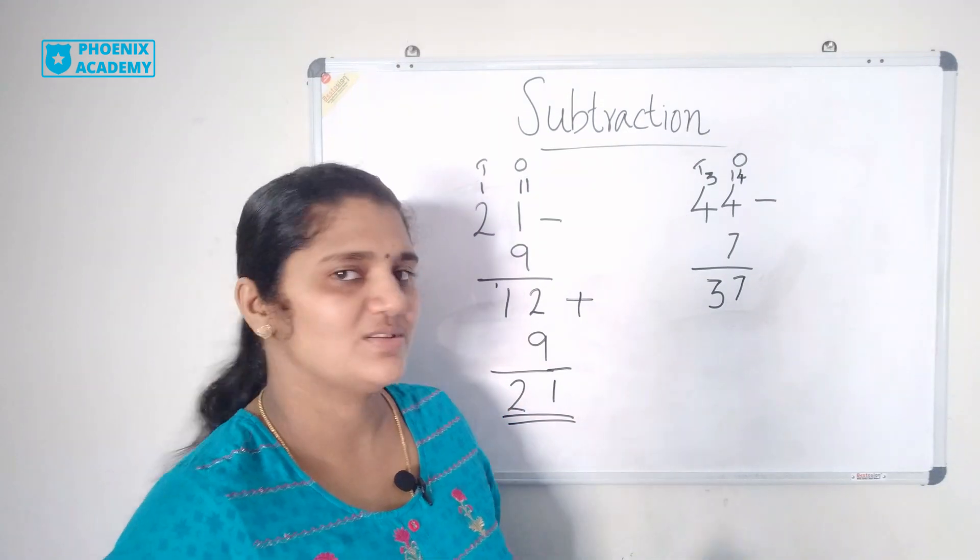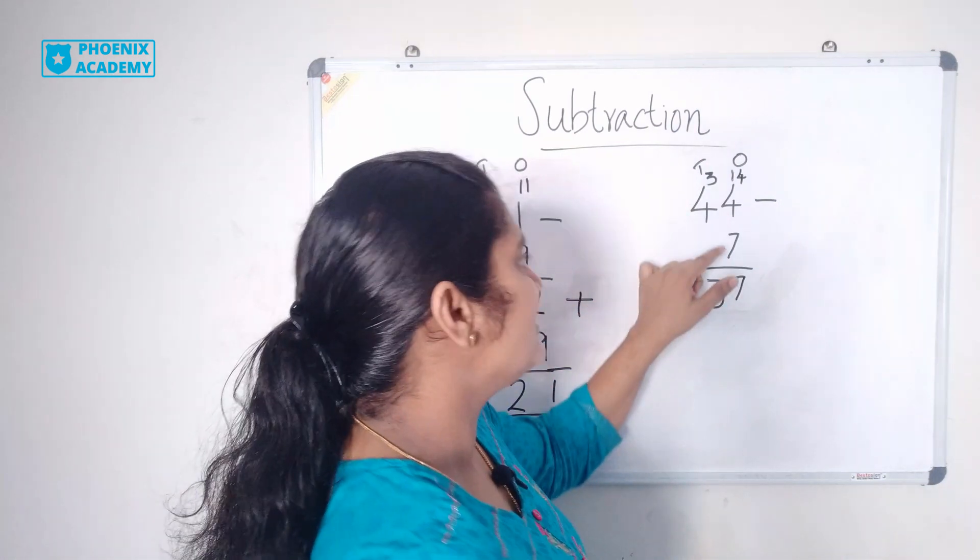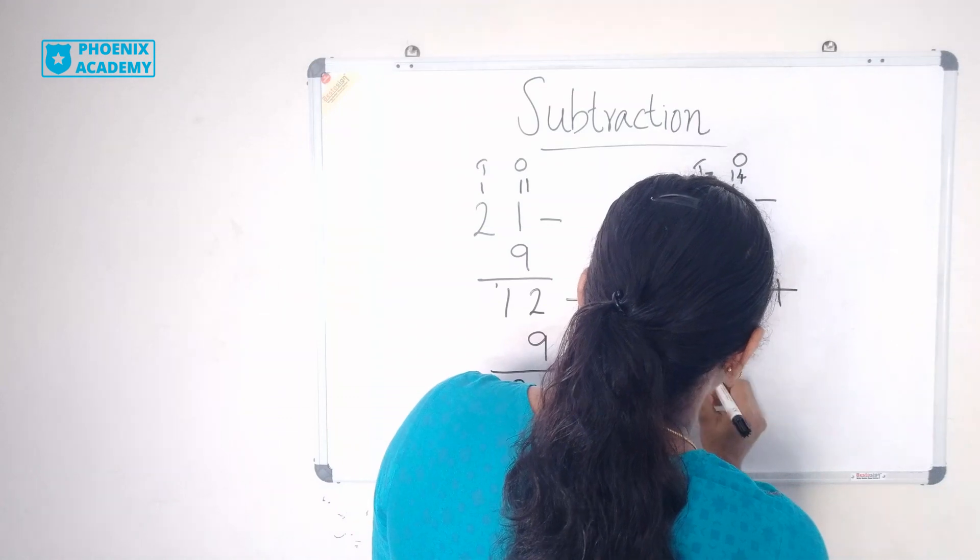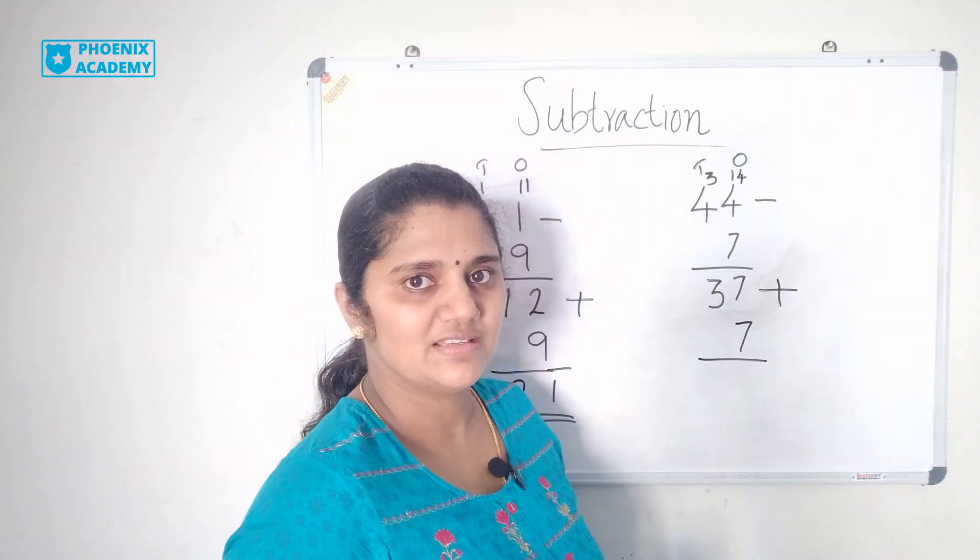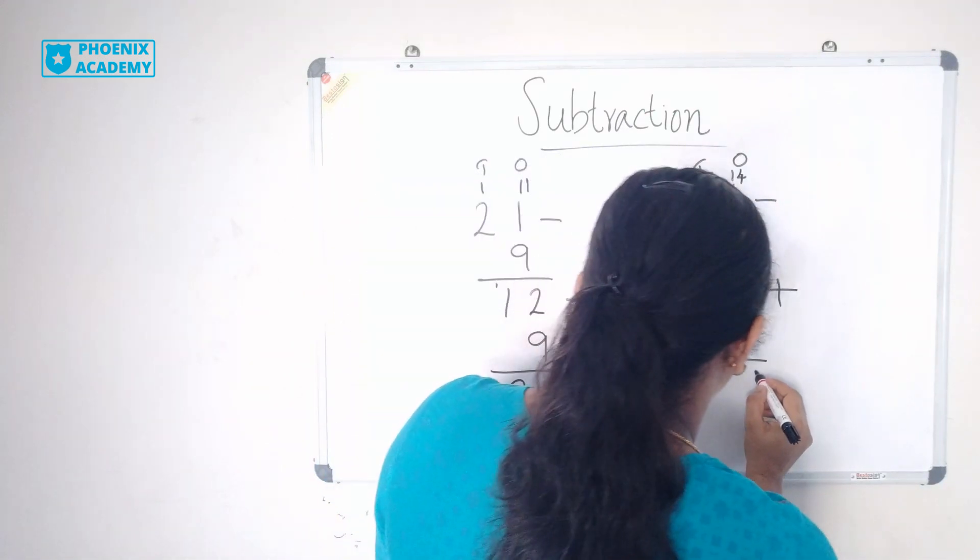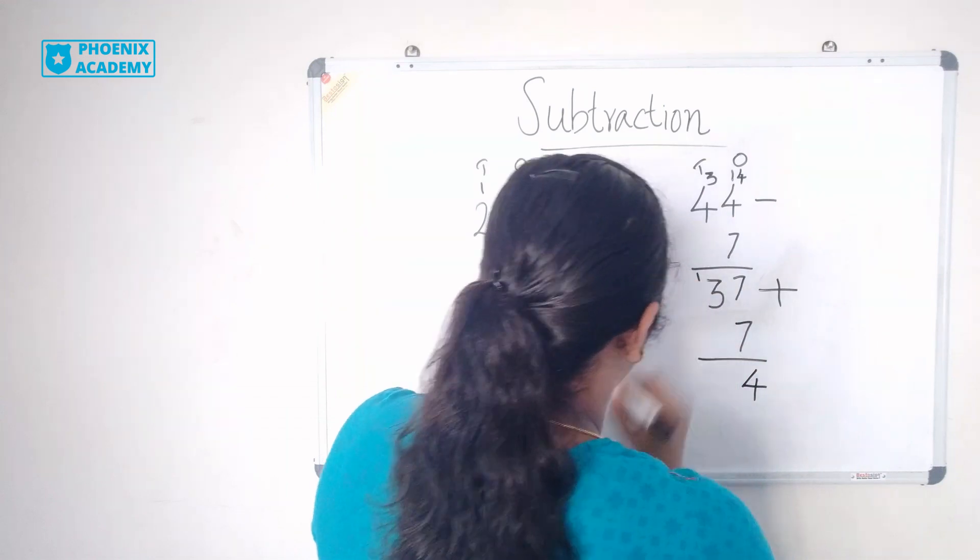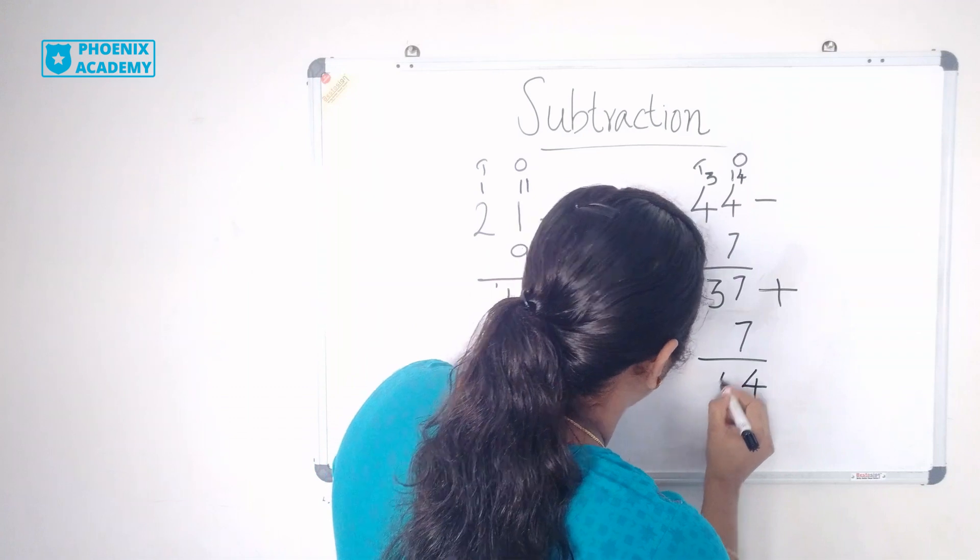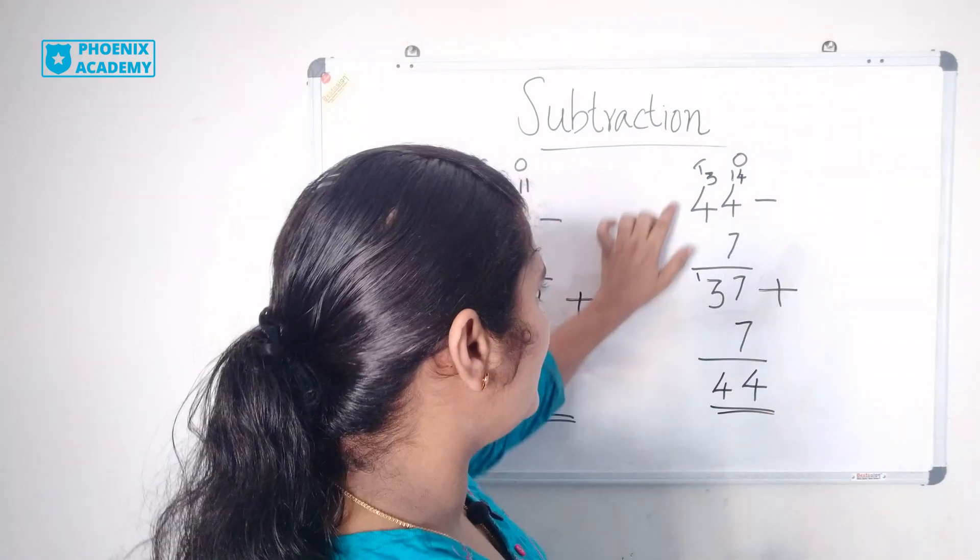Let's try the same here also. 37, which is the smaller number, plus 7. So 37 plus 7. 7 plus 7 is 14. Carry forward 1 here. Now 3 plus 1 is 4. So the answer is 44.